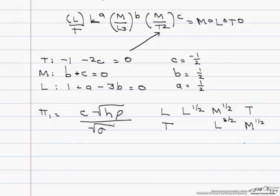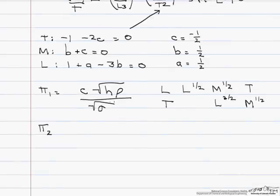So now let's look at our pi two. So our pi two now is going to be lambda, h, rho, and sigma.